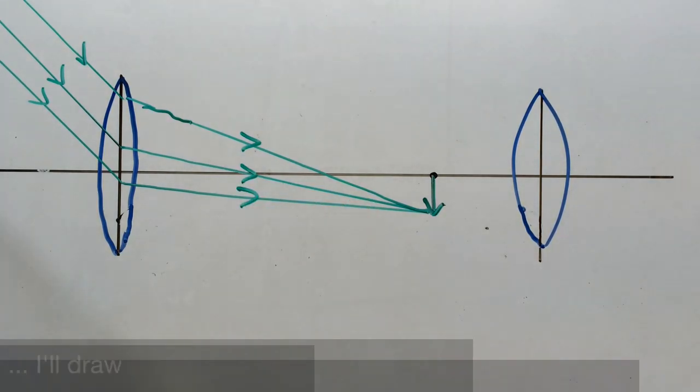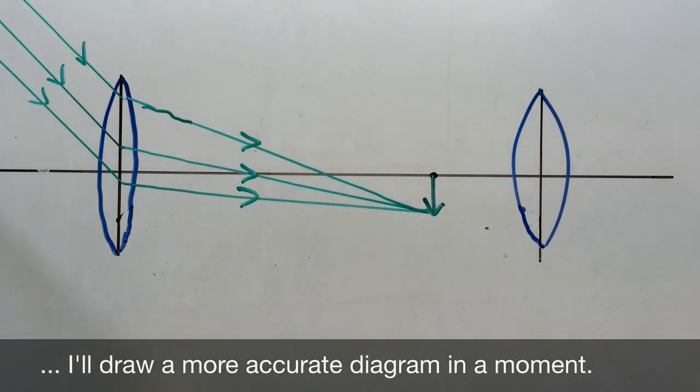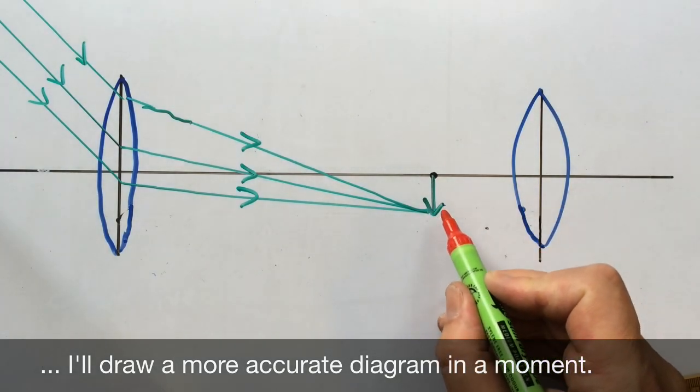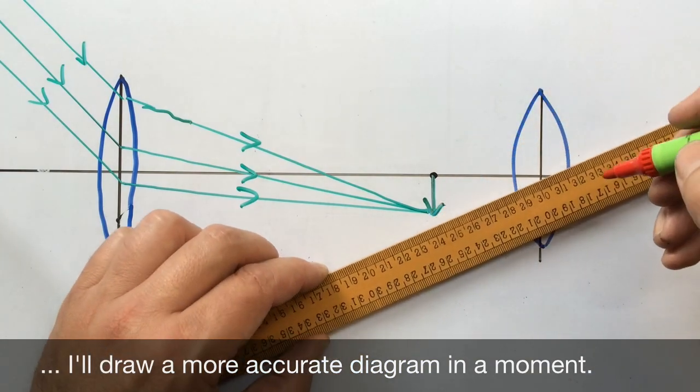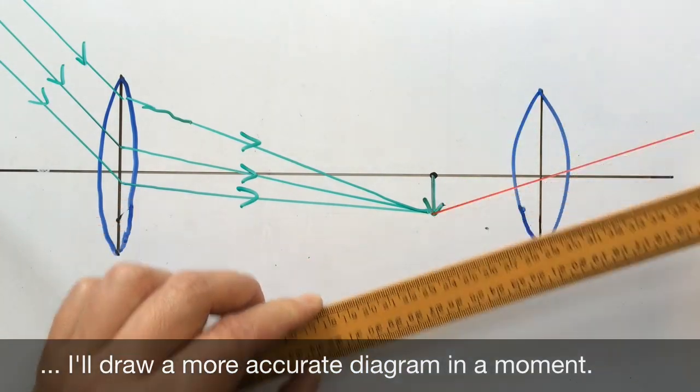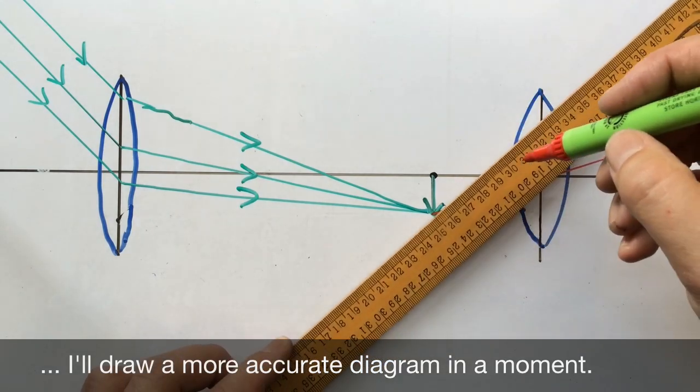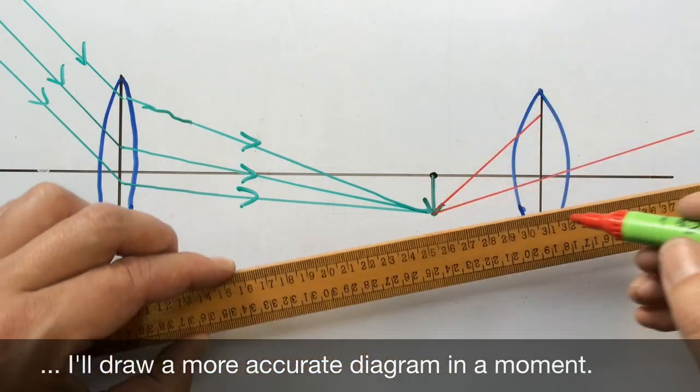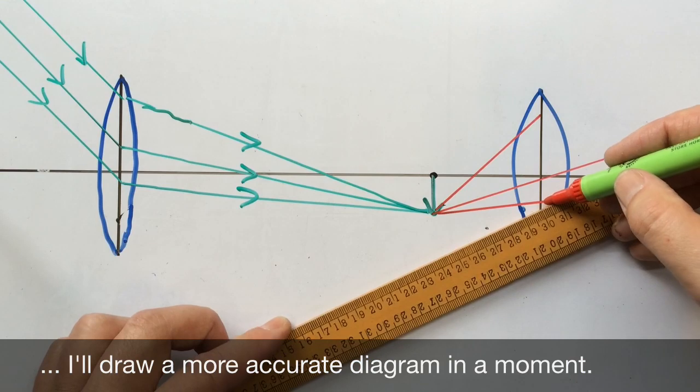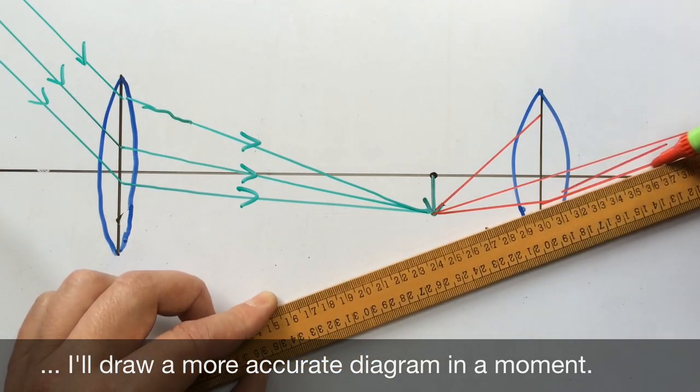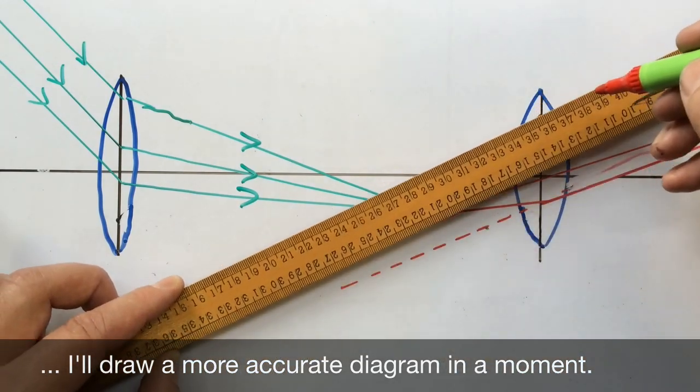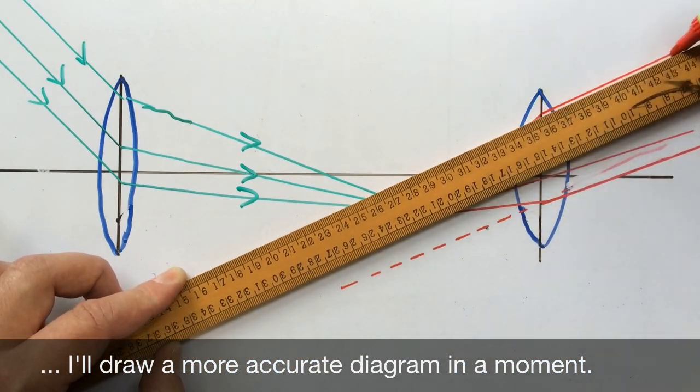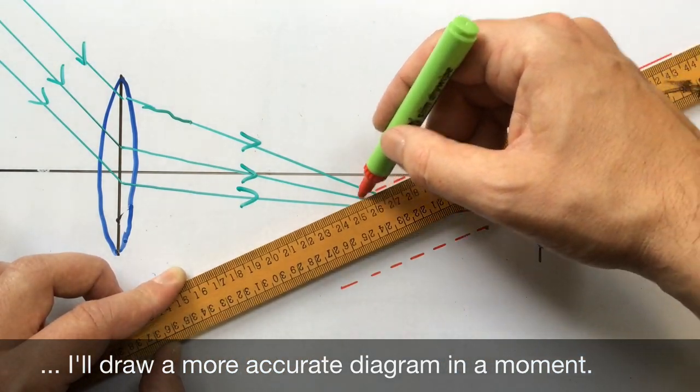This image now acts like an object for the second lens, the eyepiece. Now since the object is located at the focus of the eyepiece, the image produced by the eyepiece is a virtual image. And because it's at the focus, the virtual image essentially occurs at an infinite distance from the lens, producing a nice easy, relaxing image for the eye to look at.